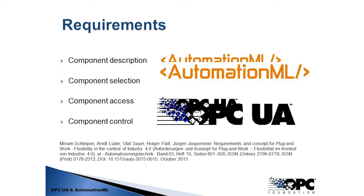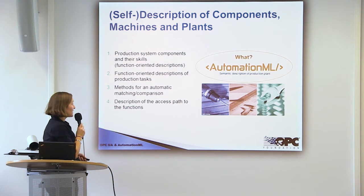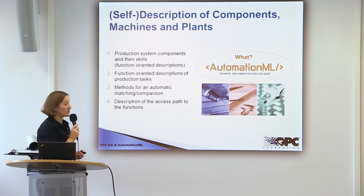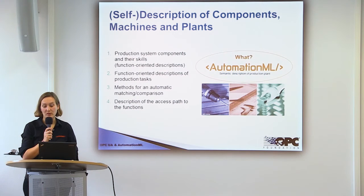Therefore, we have component access which can be done by OPC UA on each level of the Automation Pyramid or each automation layer, and we must have the possibility to also have controlling access to components, where OPC UA can also fit. This means that AutomationML can be used to describe production system components and their skills — a function-oriented description — and we can have methods for automatic matching or comparison for the selection process. Additionally, we can describe the access of the communication components of devices, meaning the access path to the function of the component.